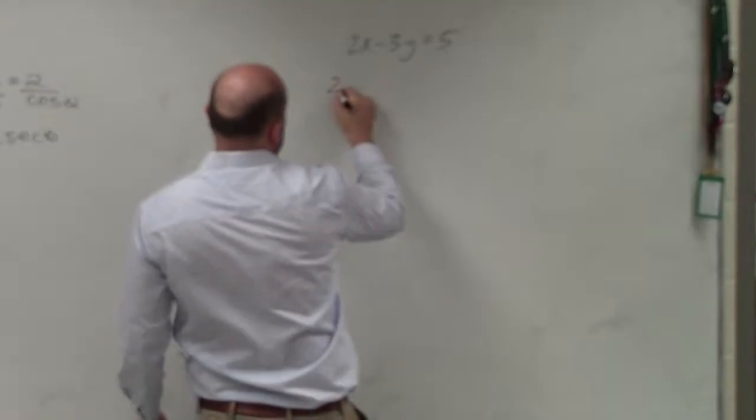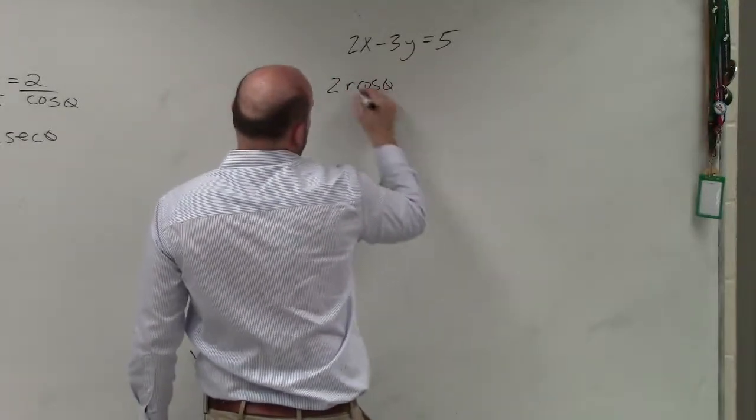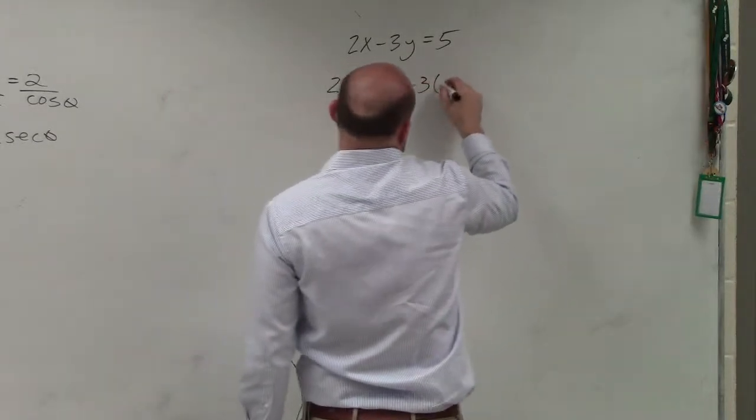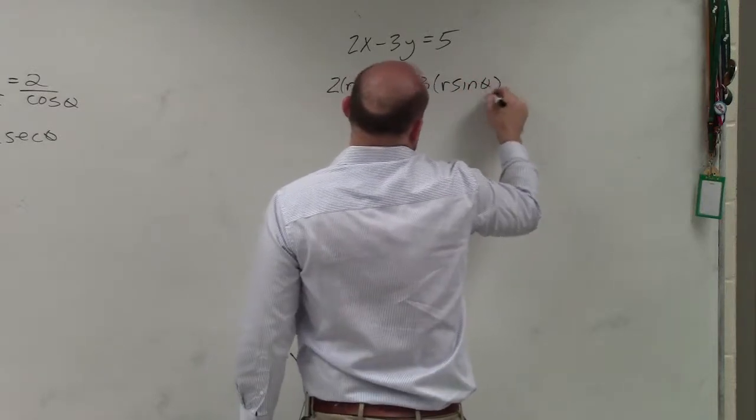We're going to do the same thing, just replace x and y with what they represent. So this is 2r*cos(θ) minus 3 times r*sin(θ) equals 5.